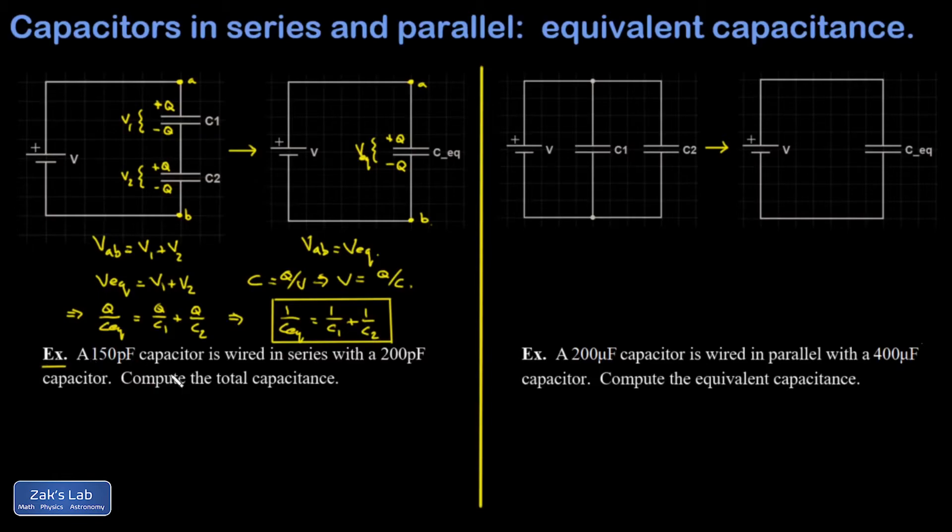Let's look at a quick example. I'm given a 150 picofarad capacitor. That's 10 to the negative 12th. And it's wired in series with a 200 picofarad capacitor. Let's get the total capacitance. We should be able to just work in units of picofarads. So I have one over CEQ equals one over C1. That's 150 picofarads plus one over 200 picofarads.